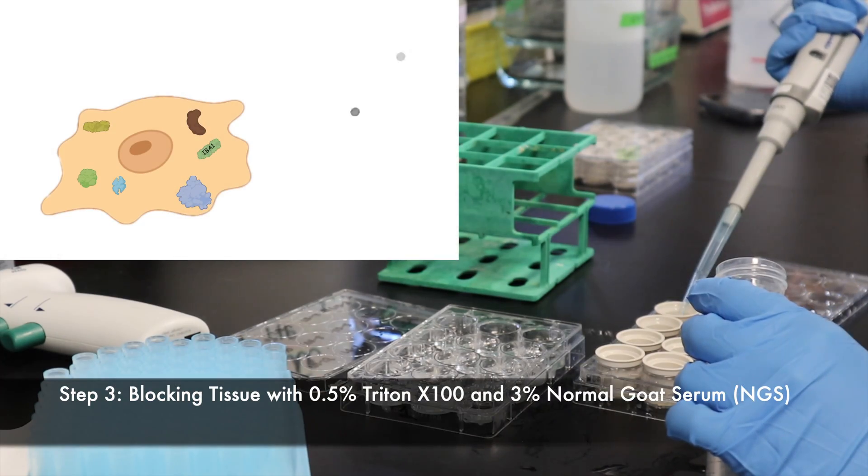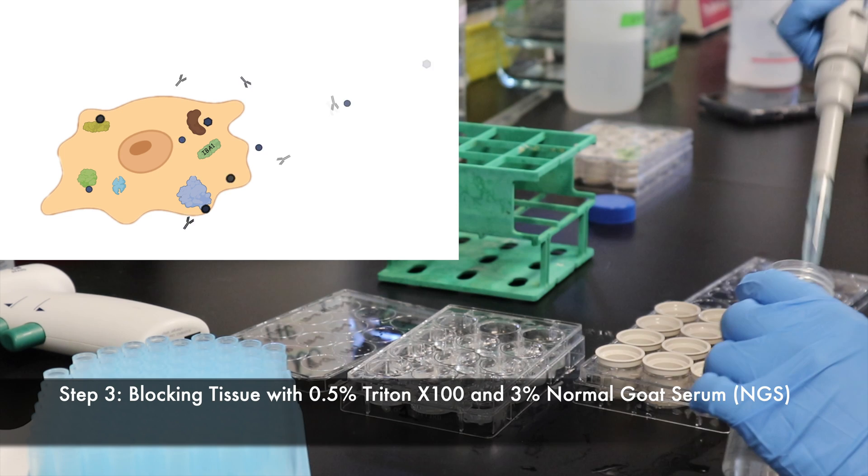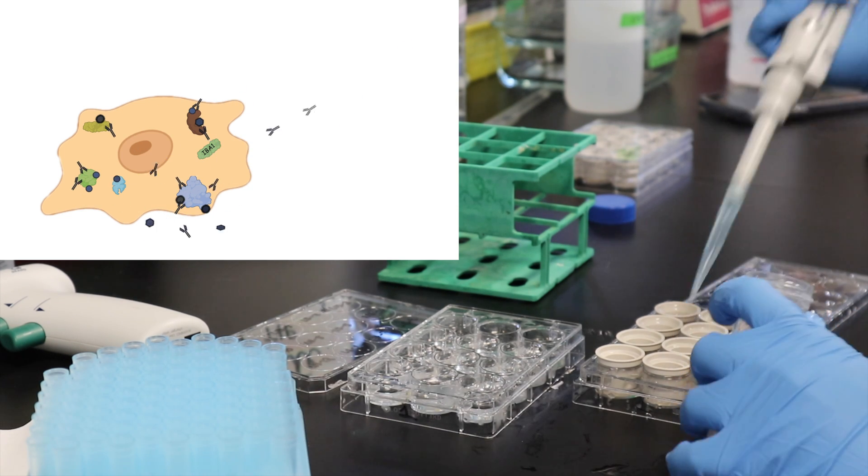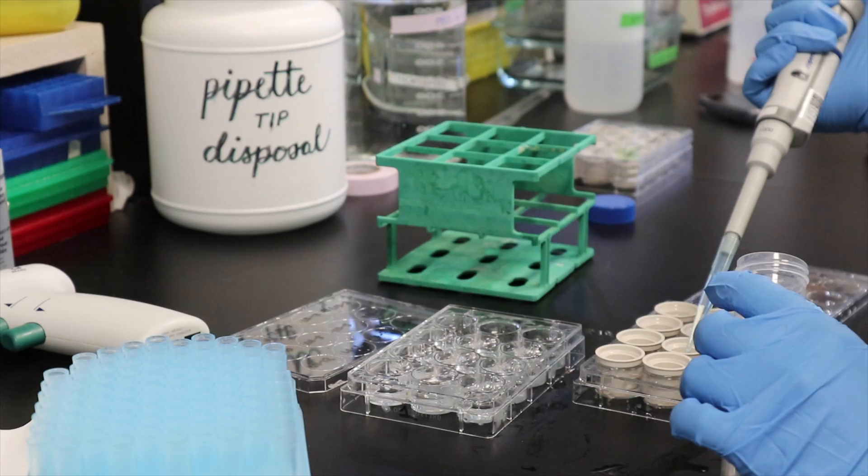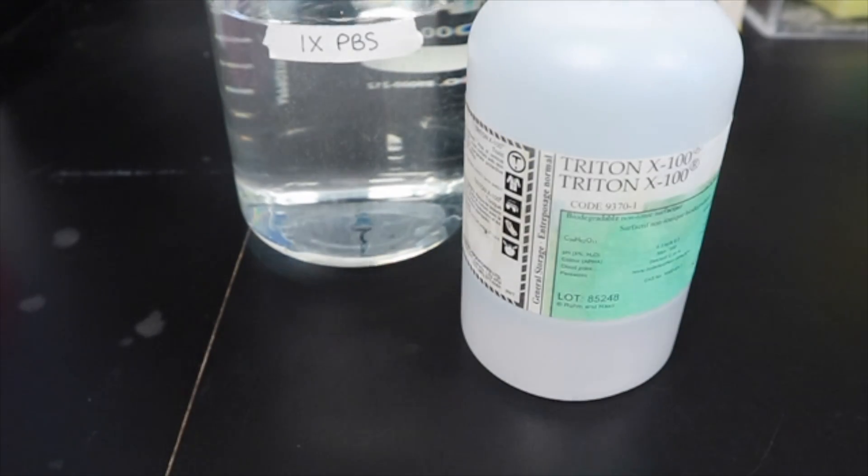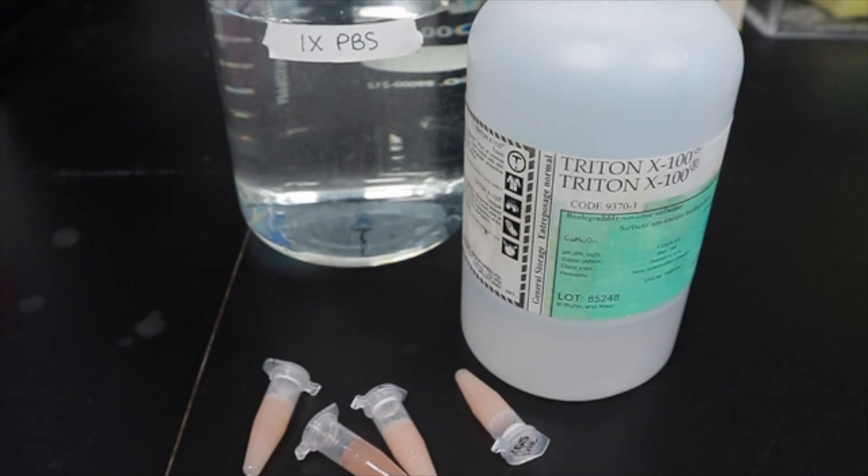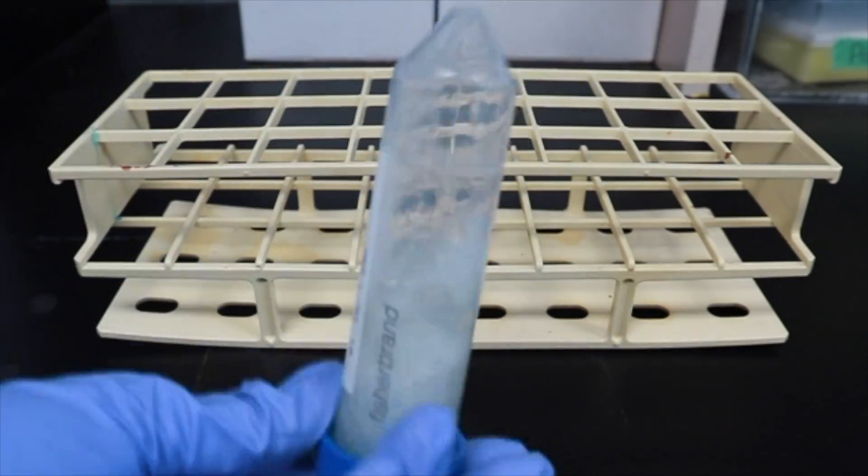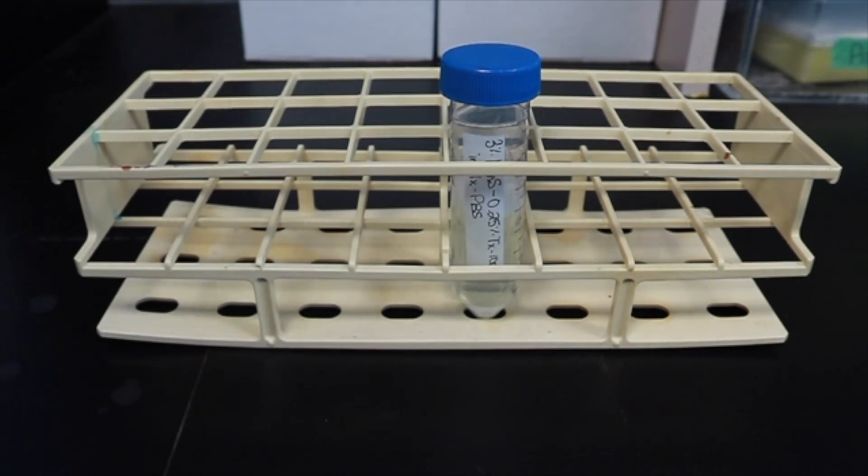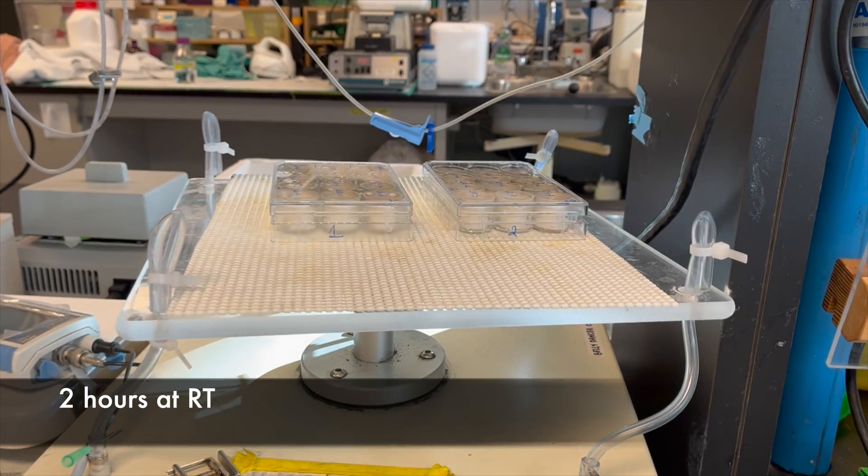In this next step, we will be adding approximately 2 milliliters of blocking buffer to each well in order to prevent nonspecific binding of the primary antibody. To make the blocking buffer, you will need 500 milliliters of 1X PBS for dilution, 0.5% Triton X, which will act as a detergent to increase cell permeability, and 3% normal goat serum to reduce noise caused by nonspecific binding of antibodies. Make sure to mix your solution well by inversion, and once added to your tissue, incubate plates at room temperature for 2 hours.